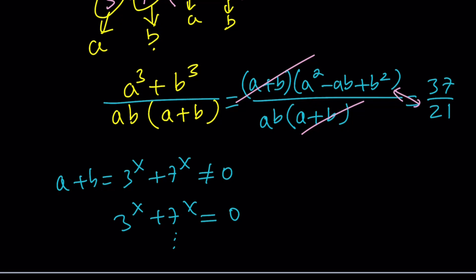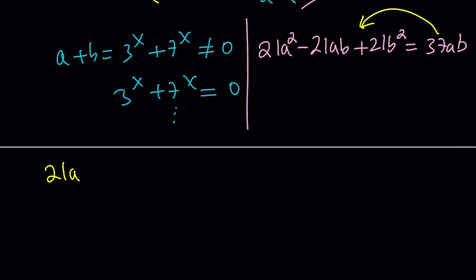Now is the time to cross multiply. Starting with the quadratics, this gives us 21a^2 - 21ab + 21b^2 equals 37ab. Now subtract and set it equal to 0. So 21a^2 - 58ab + 21b^2 = 0.